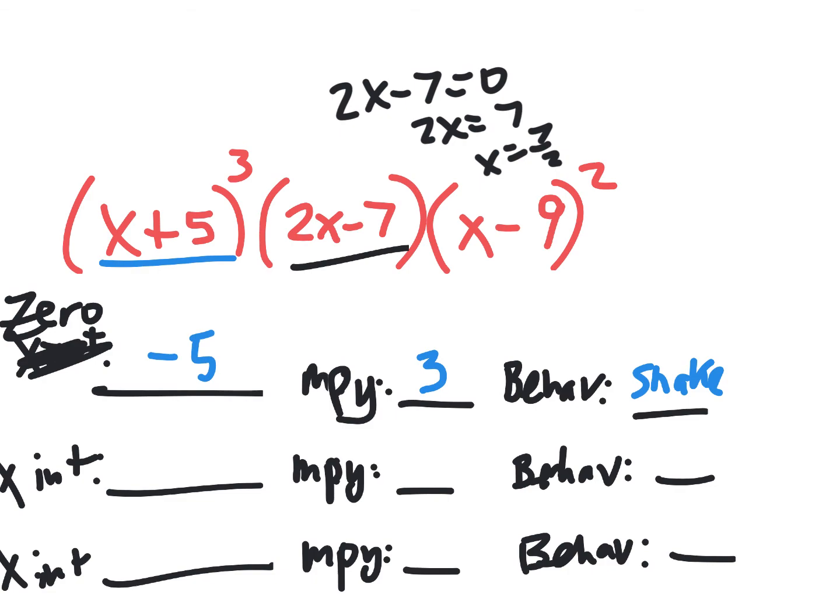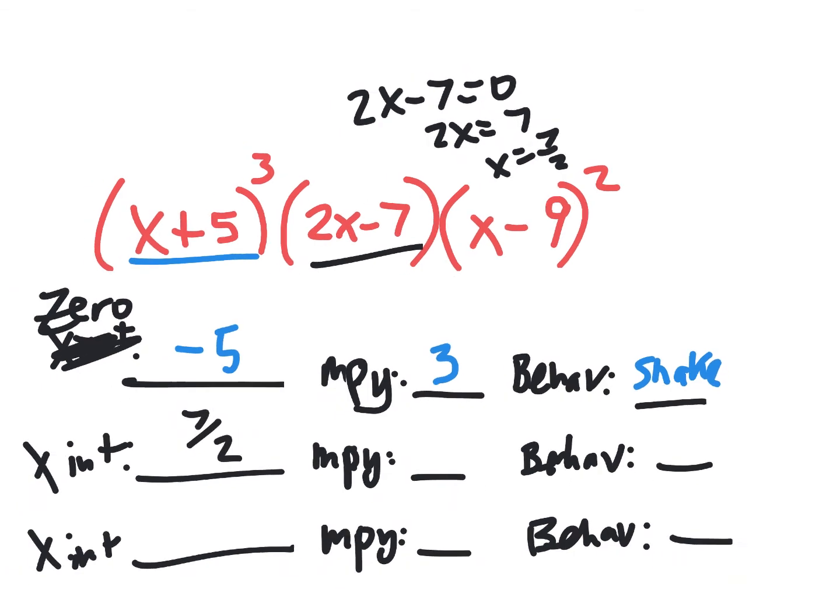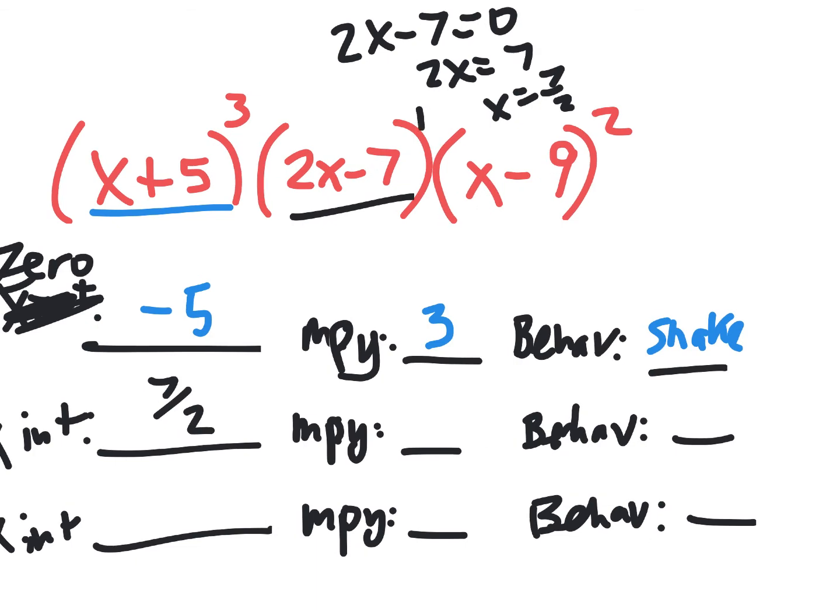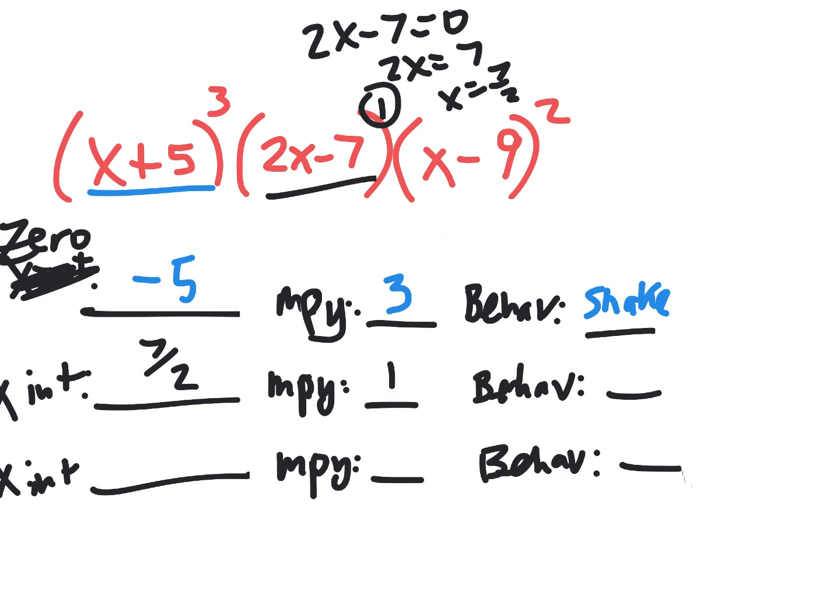Nice. And then seven over two is the x-intercept, also known as the zero. What's the multiplicity of it? One. Yes. There's no number there, but it's a one. And what behavior, how would we say what it does at the x-intercept? Goes through. Goes through is totally good. I would have accepted cut through, go through, or pass through.